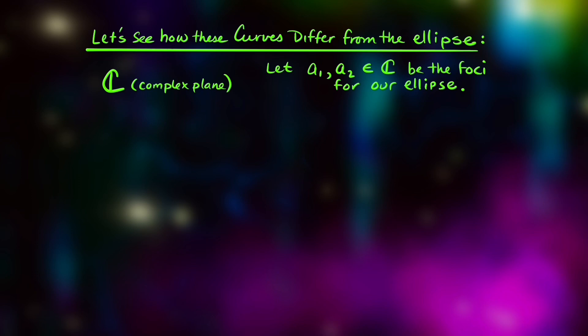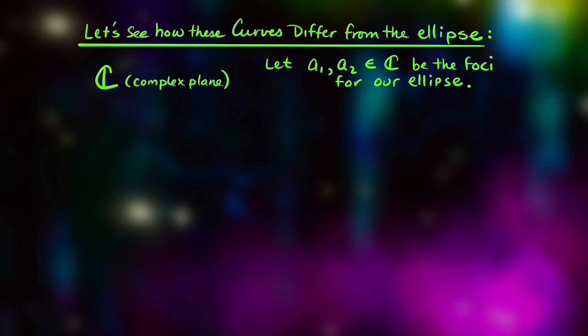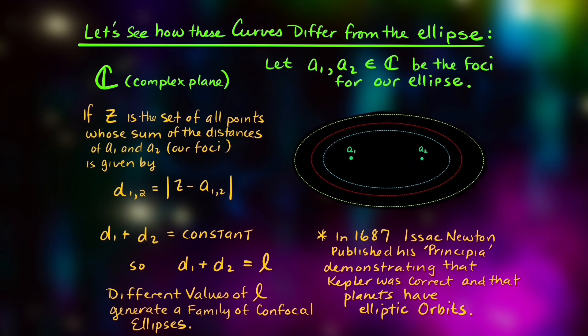Now taking these curves into the complex plane, let's see how these curves differ from the ellipse. And we're going to let a_1 and a_2 be numbers in the complex plane as well as being the foci for our ellipse. And so the distances from any point z to either of these foci, then summed together as always constant, let's call that constant L, shows us that for different values of L, we generate a family of confocal ellipses.